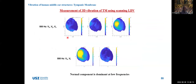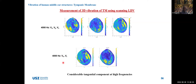This shows the normal component and the tangential component at 500 Hz. The normal component is dominant, and the tangential component is very negligible at this frequency. However, at high frequency — around 4 kHz — the tangential component was not negligible. We found considerable tangential components at high frequencies. This contradicts the assumption from classical shell theory that only normal motion is dominant.